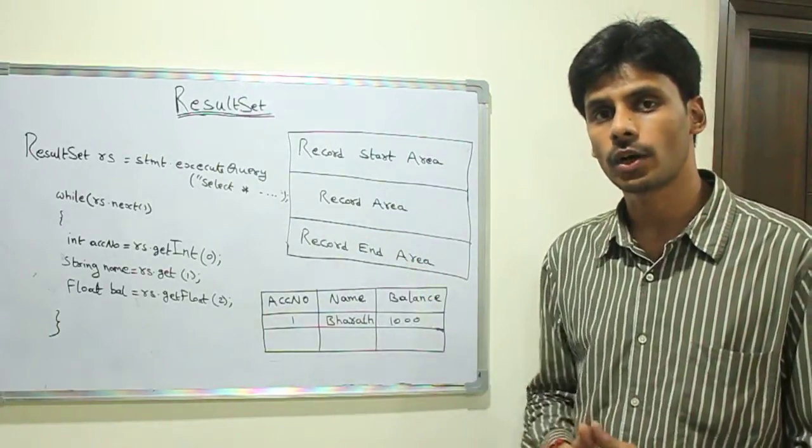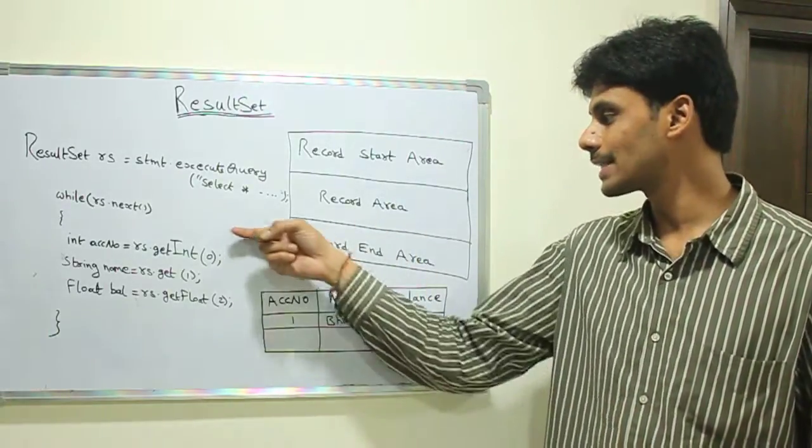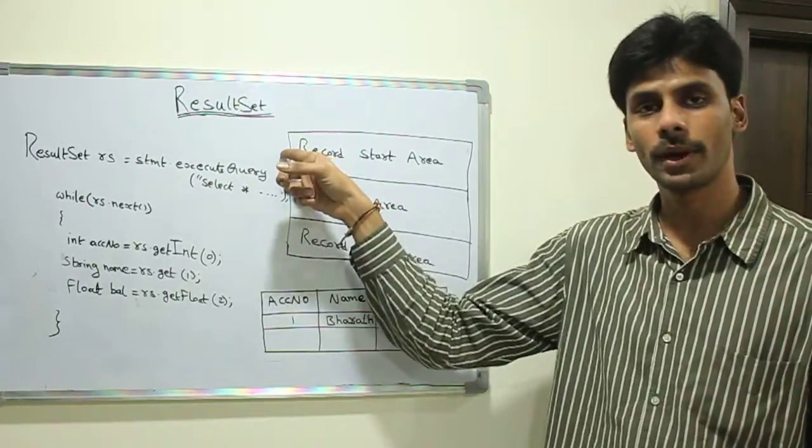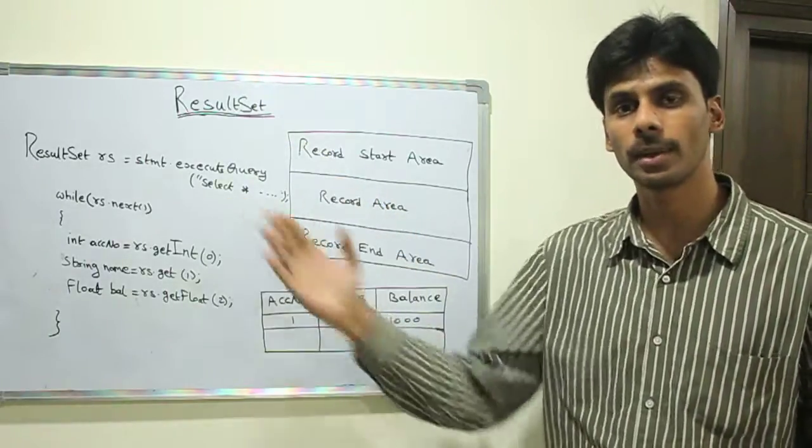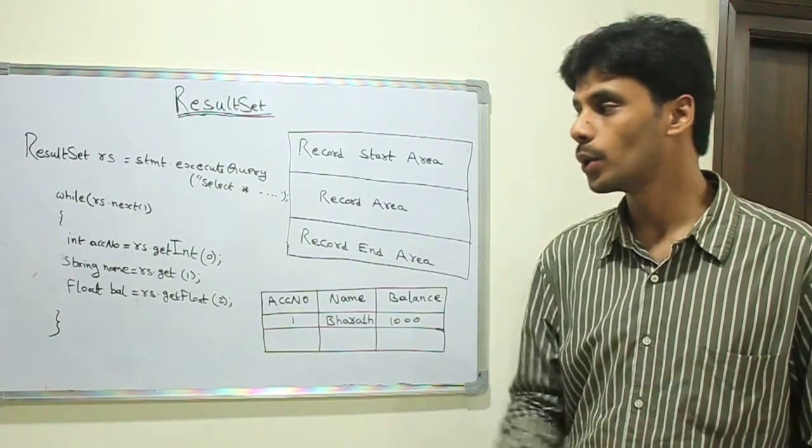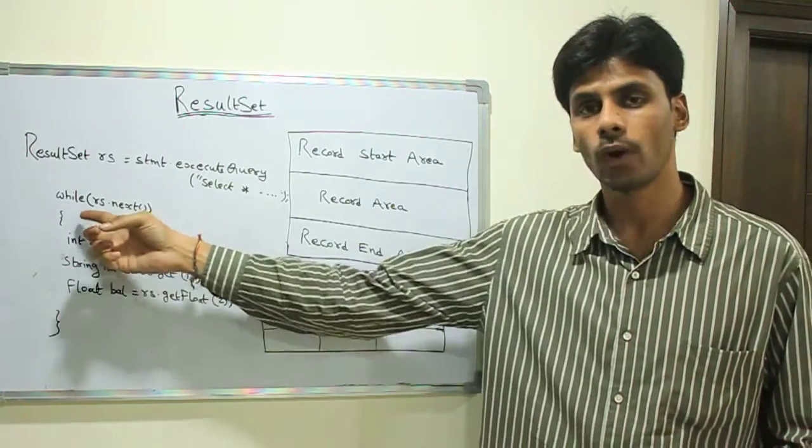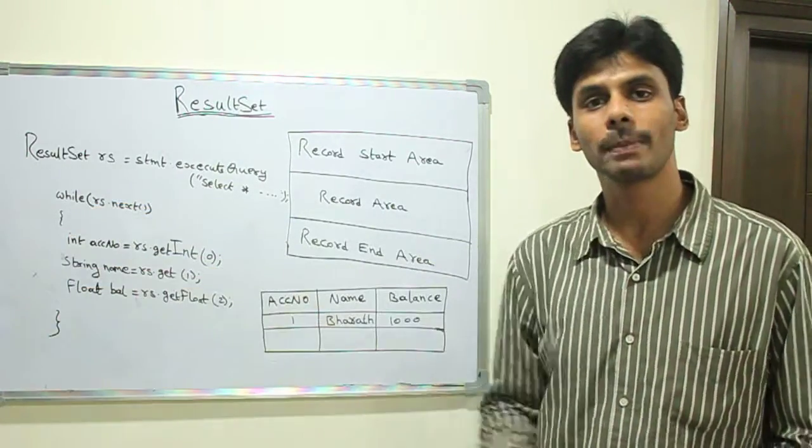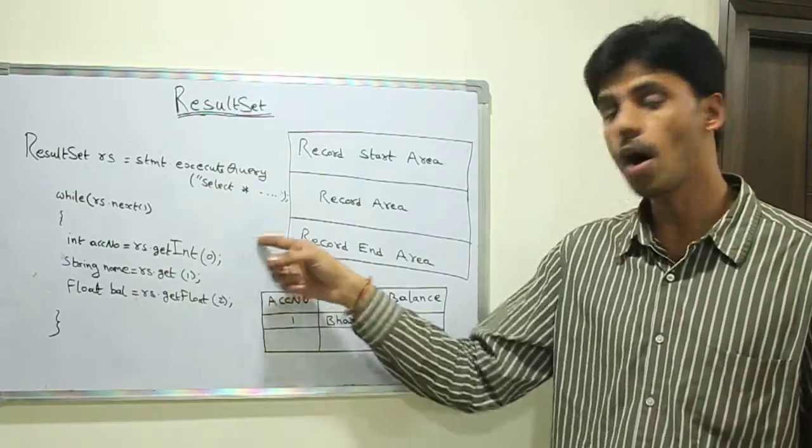It returns false if it reaches the end or if there are no records at all. If you try to do rs.next and there are no records, it returns false, so the loop will never be executed. If it reaches the last record, it also returns false.